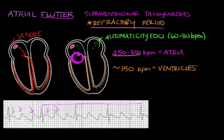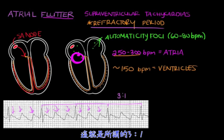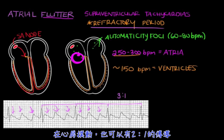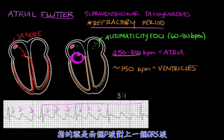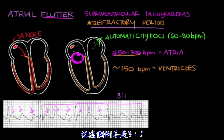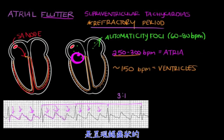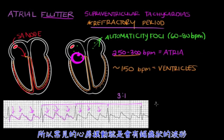In this example, we have three P waves for every QRS, so this is called three-to-one conduction. In atrial flutter, you can also have two-to-one conduction with two P waves per QRS, or even four or five P waves per QRS. If you look closely, the P waves make a pattern that resembles the teeth on a saw, so classic atrial flutter is said to have a sawtooth pattern, and the saw teeth are the P waves.